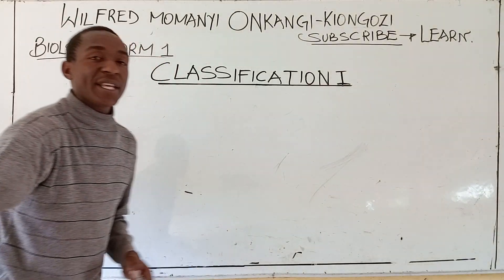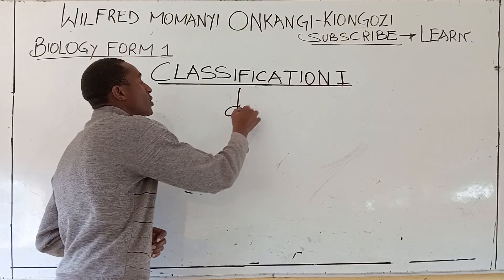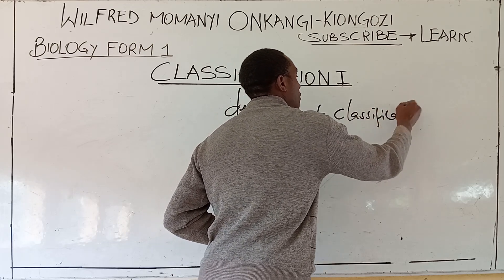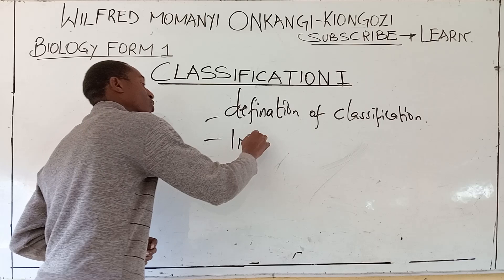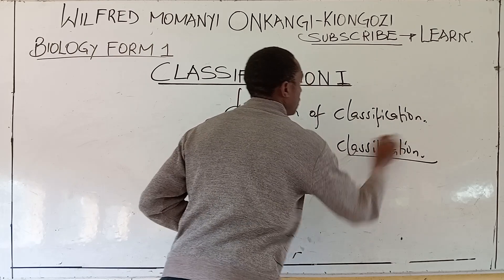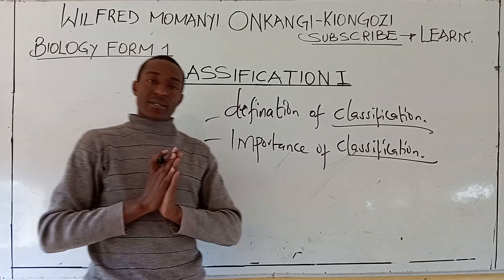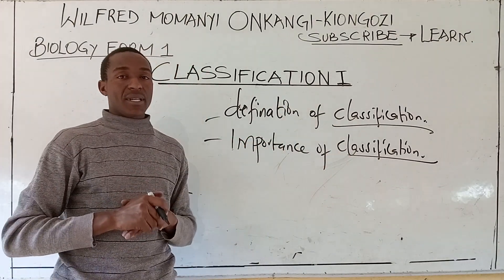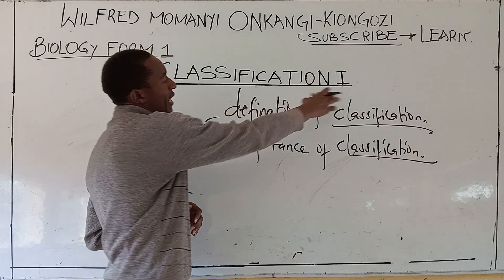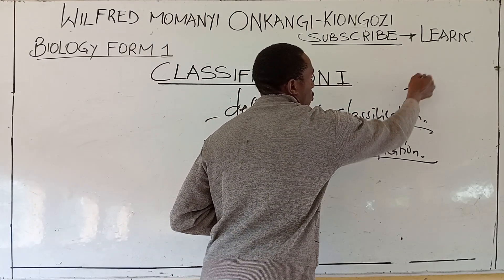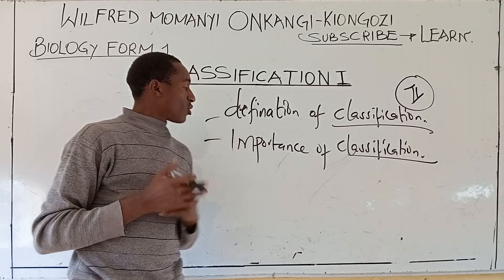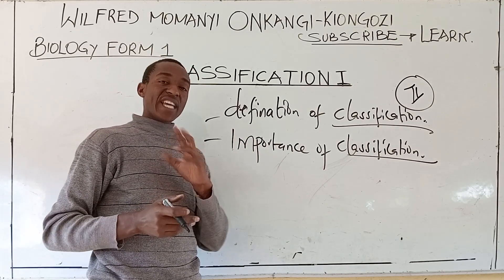In our lesson today we have two objectives. The first one is the definition of classification, and number two is the importance of classification. The introduction to biology helps us understand how to classify organisms. This chapter is also in form three as classification two, so a good foundation in form one will give you an easy time in form three.